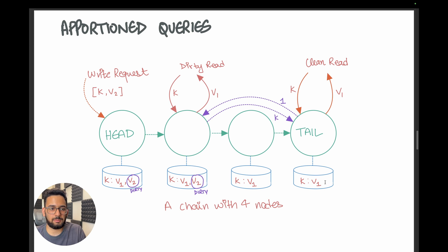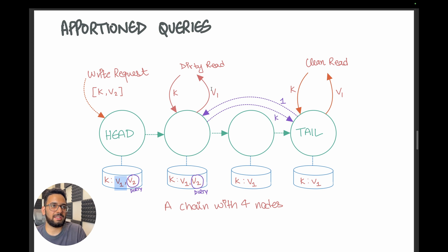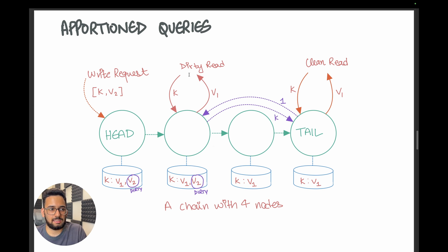Once the tail is able to acknowledge V2 and the write propagates down, we can mark this version as clean and delete all previous versions. The benefits of this strategy depend on your read patterns. If you query very recently written data frequently, nodes may need to consult the tail to get the latest version when it's dirty. However, if you query older data that is not very recently written, this technique scales out well because nodes can serve those reads independently.